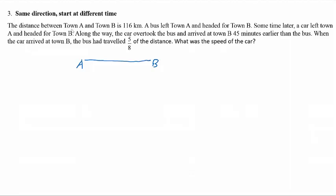In this question, the distance between A and B is 116 km. At first, a bus left town A and headed for town B. The bus left first and sometime later, the car left town A and headed for town B. That means the car will start to chase after the bus.